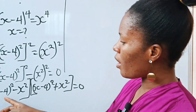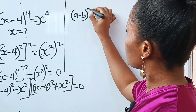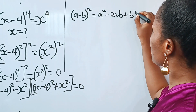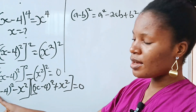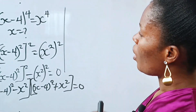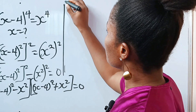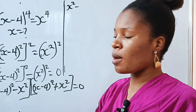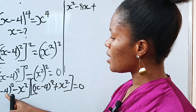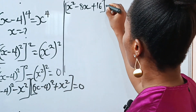Now we introduce another algebraic identity: a minus b squared is equal to a squared minus 2ab plus b squared. In this case, our a is x while our b is 4. So x minus 4 squared can be expressed as x squared minus 2 times x times 4, that is minus 8x, plus 4 squared which gives us 16.